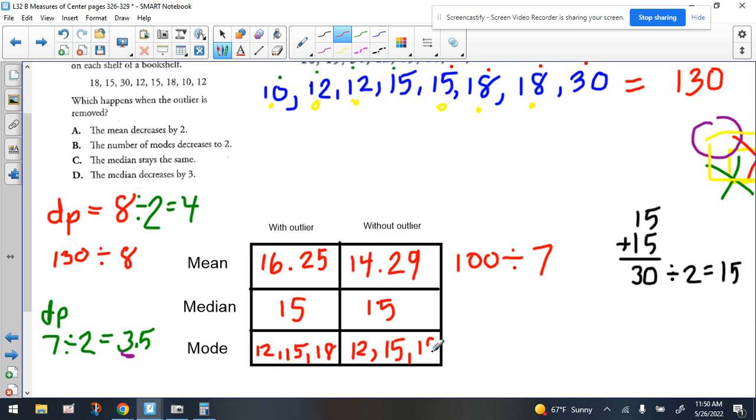All right, so now let's look at our organized chart here and go through each choice. So we already talked about the idea that the mean decreased by two. It was awfully close to two, but it wasn't exactly two. So that's not entirely true because, you know, that's if you round it maybe, but we're not rounding. All right, so the number of modes decreases to two. We had three modes here, and we still had three modes. So that's not true. The median stays the same. So the median did stay the same, right? We got 15 with the outlier, and we got 15 without it. And then the median decreases by three. That's obviously not what happened.